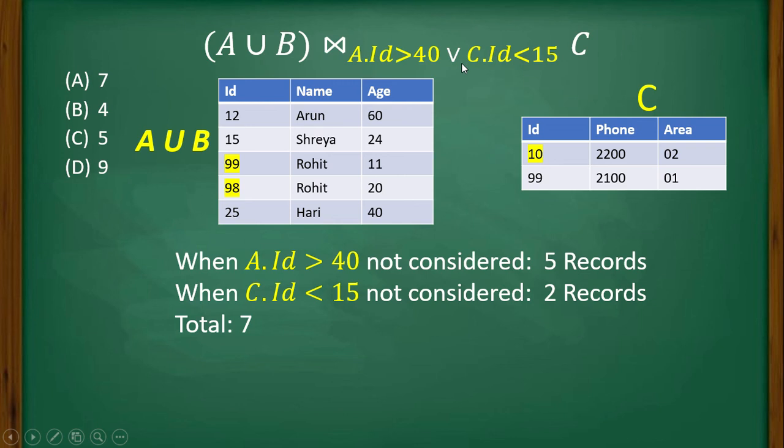Now if this condition is not satisfied, we are not considering this condition as this is an OR part. We are considering this condition A.id greater than 40, right? Which are the records satisfying this condition? These two records, A.id is greater than 40 here and here. So these two are going to participate in the join operation, and from here we are not considering this. Both of them will participate in the join operation.